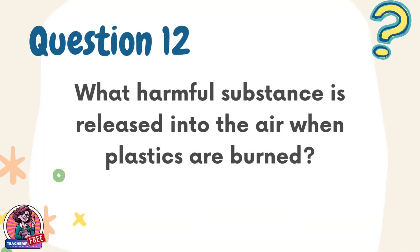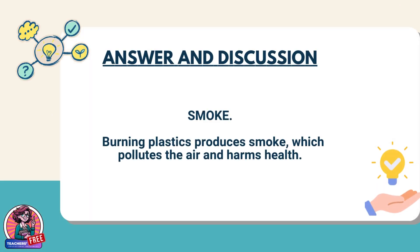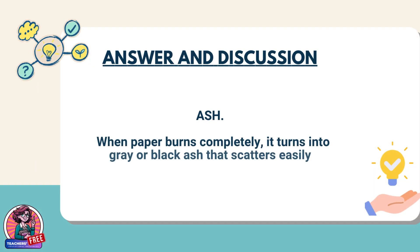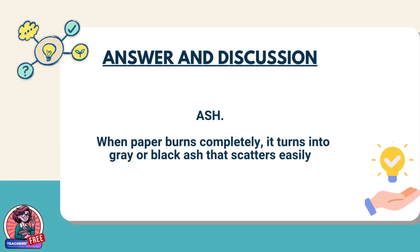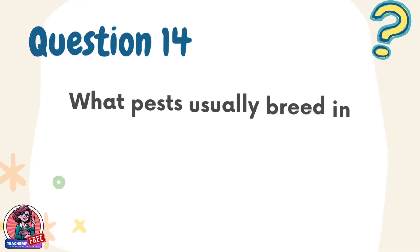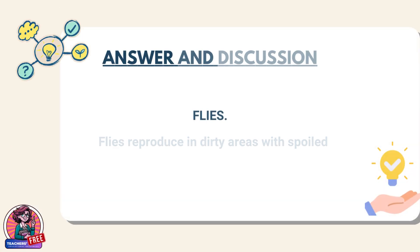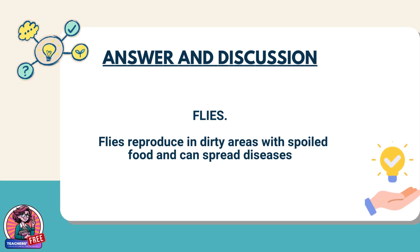Question 12. What harmful substance is released into the air when plastics are burned? Answer: Smoke. Burning plastics produces smoke, which pollutes the air and harms health. Question 13. What solid material remains after paper is burned? Answer: Ash. When paper burns completely, it turns into gray or black ash that scatters easily. Question 14. What pests usually breed in garbage dumps with spoiled food? Answer: Flies. Flies reproduce in dirty areas with spoiled food and can spread diseases.